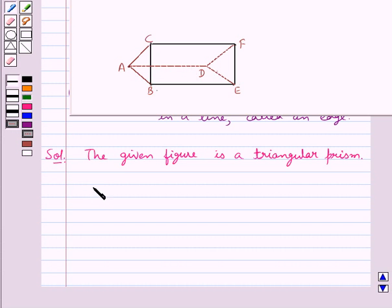Now we shall name the faces, vertices, and edges of this triangular prism. First, let's name the faces. It has two triangular faces.